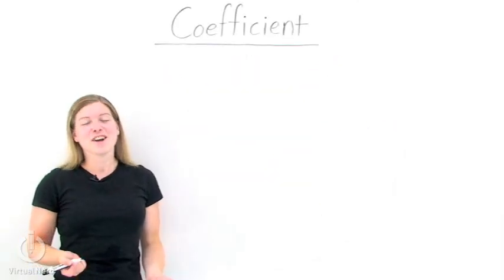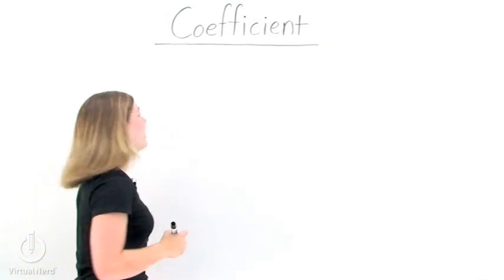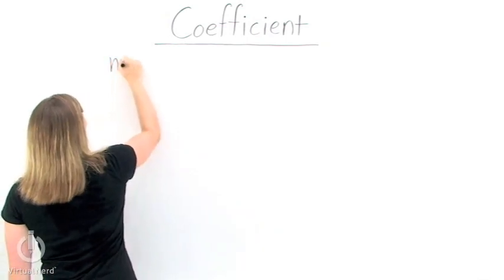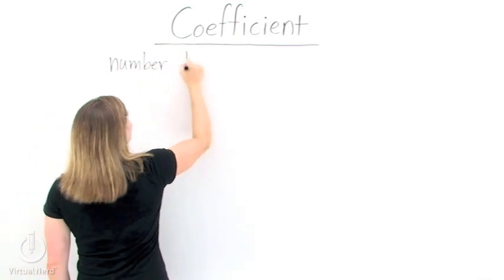What is a coefficient? A coefficient is just a really big word for a constant, or a number, that sits in front of or before a variable or term.